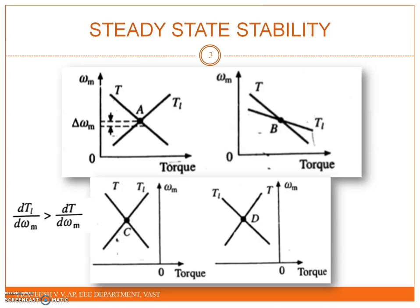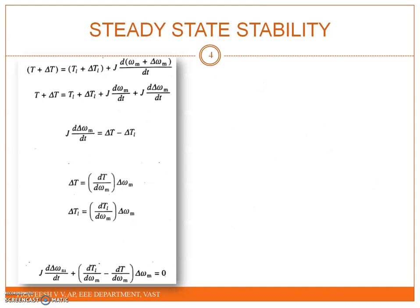Starting from the equation T minus T_L equal to J times d-omega by dt, this is the fundamental dynamic equation of the motor-load system from which we will derive the stability condition.